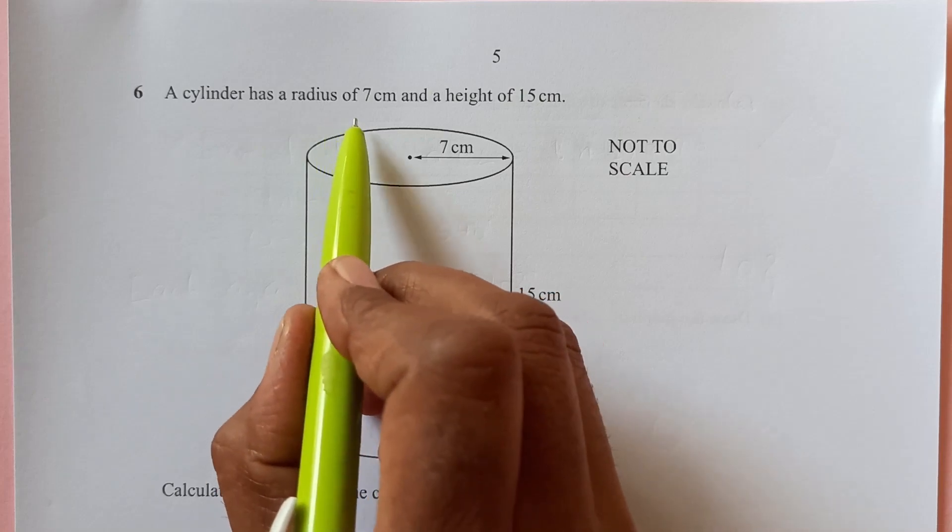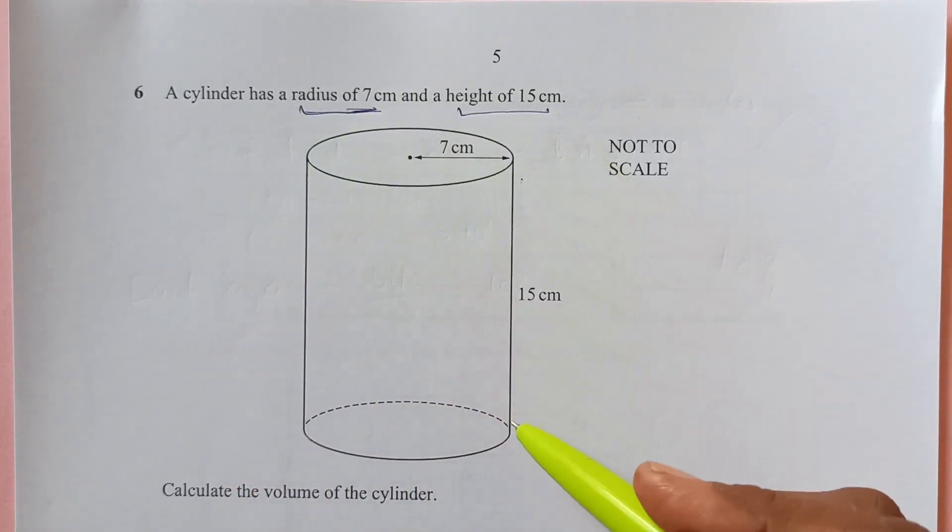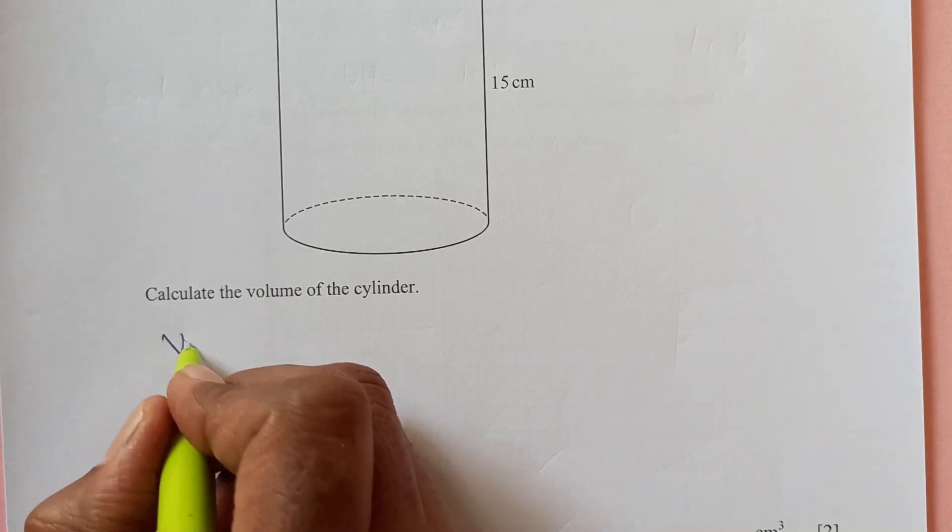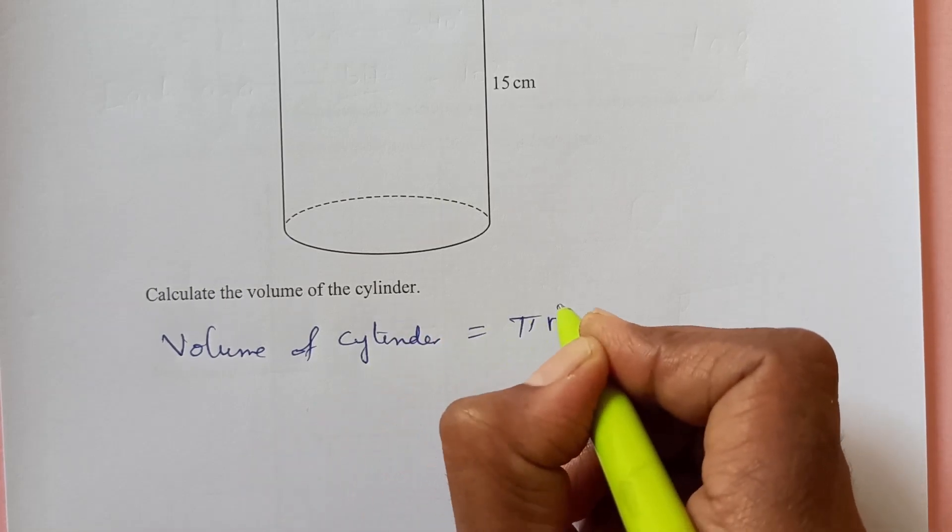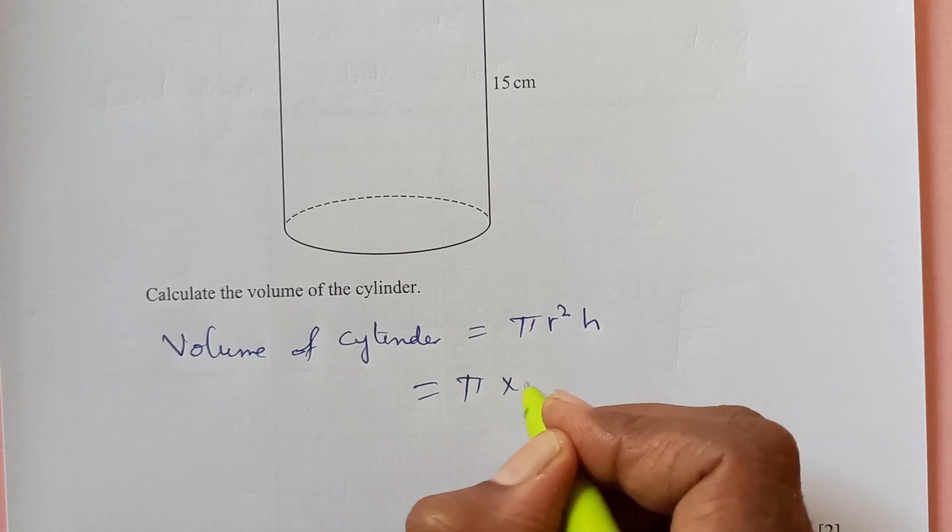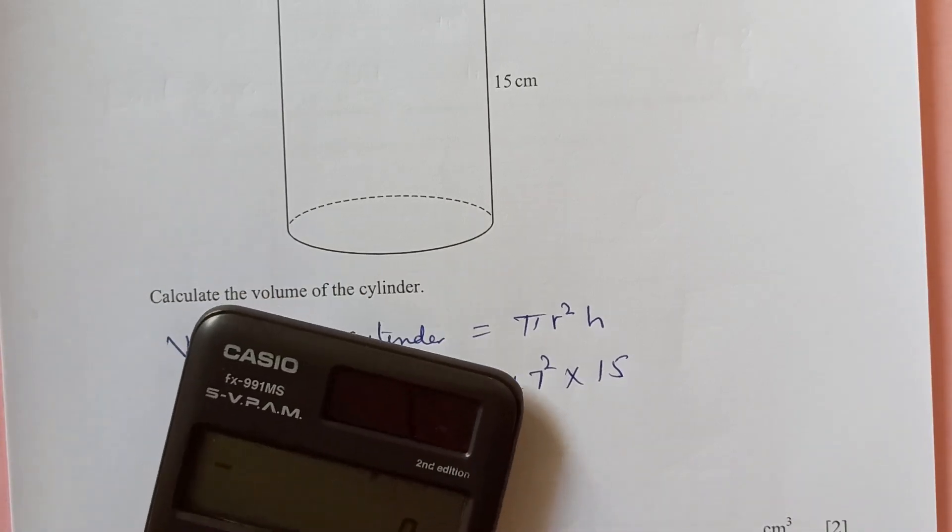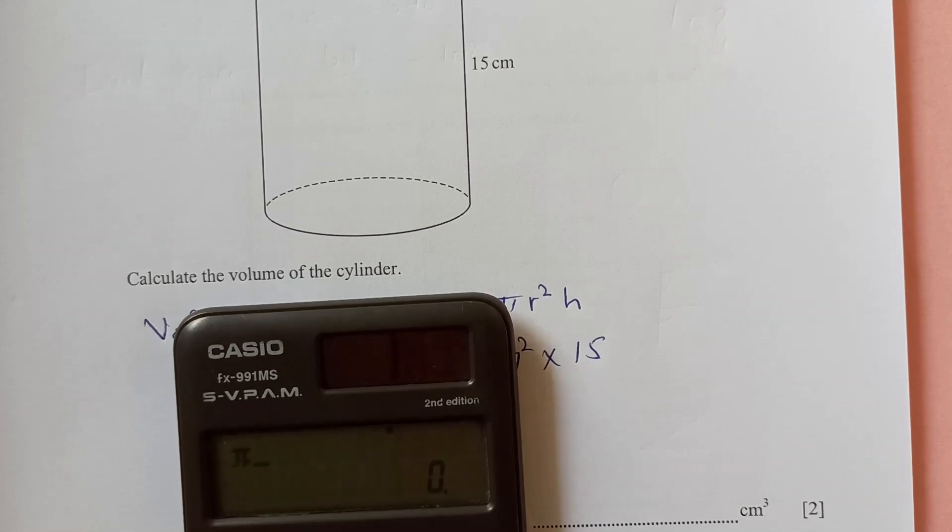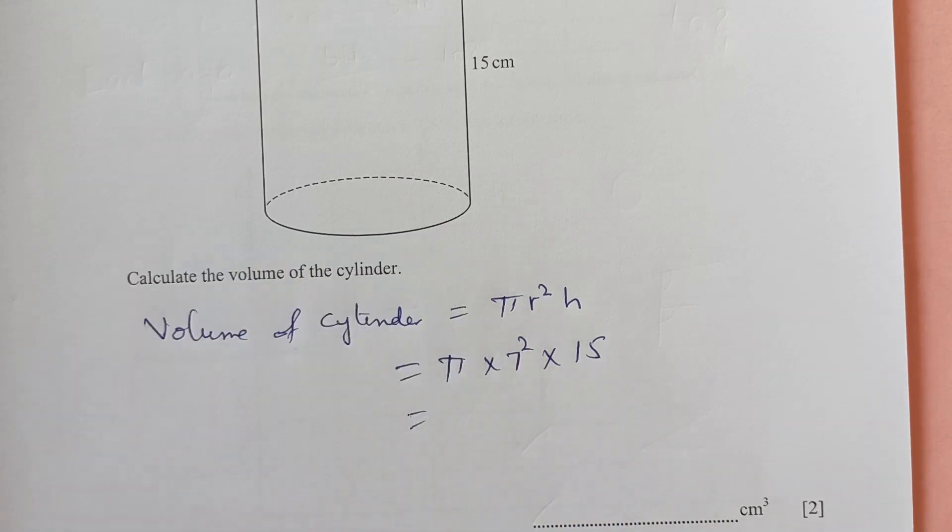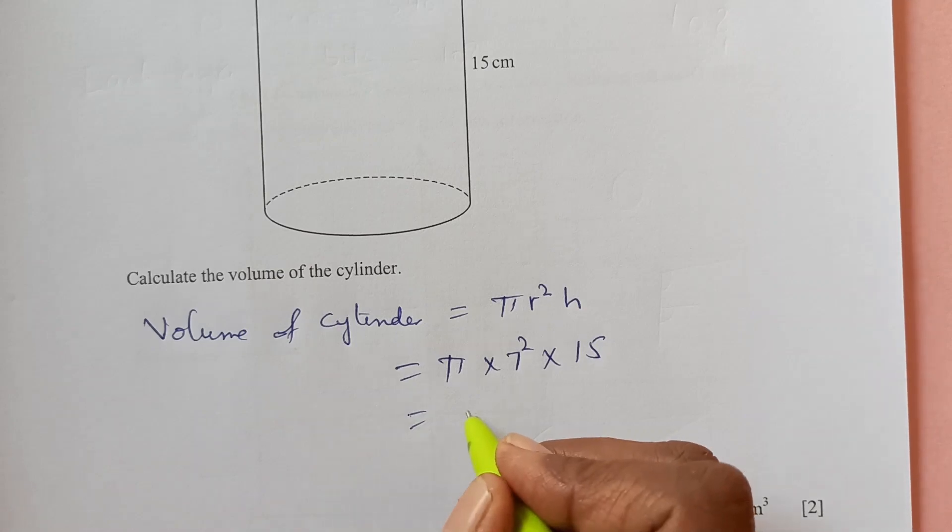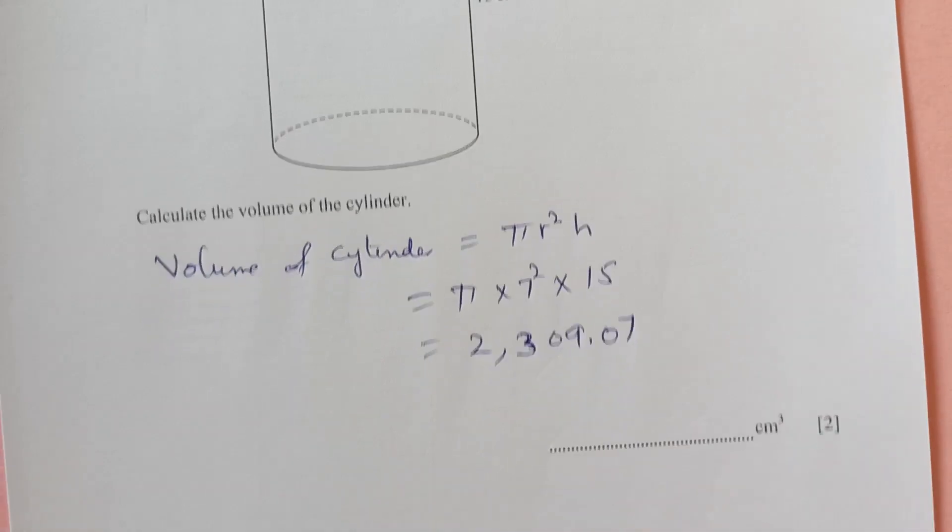Number 6. A cylinder has seven centimeter radius and height of 15 centimeters. So, radius is seven and height is 15. Calculate the volume. Volume of the cylinder. Formula of volume of cylinder is pi r squared h. So, pi r is seven squared and h is 15. We can just calculate it directly. This is going to be pi times 49 which is 7 squared times 15. So, we have here 2,309.07. So, that is the answer.